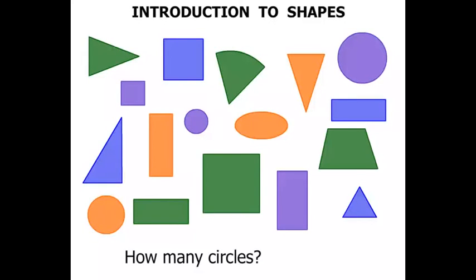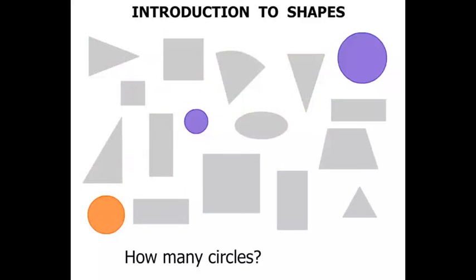Next question. How many circles? We'll have a good look. Again, let's fade out the rest. So what have we got? One. Two. Three. We've got three circles as well.